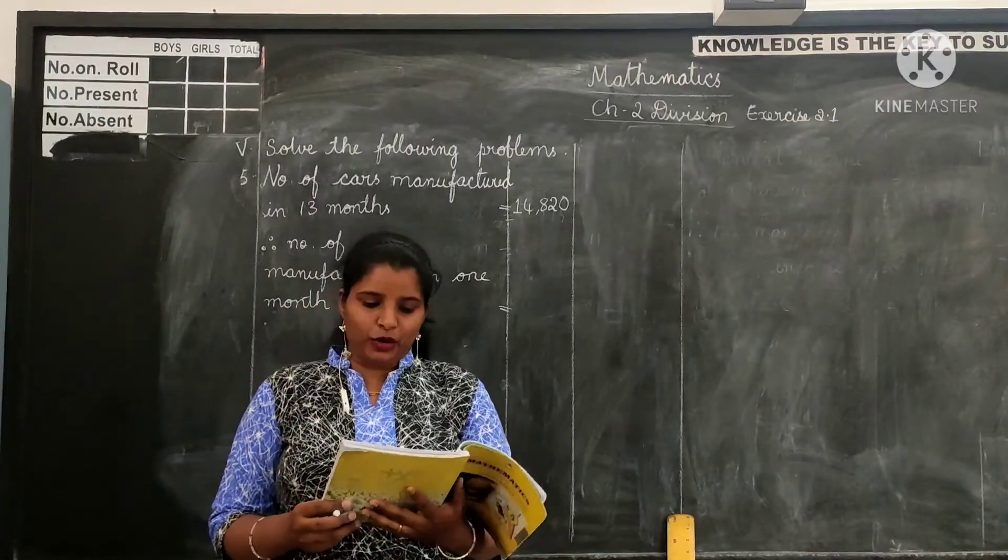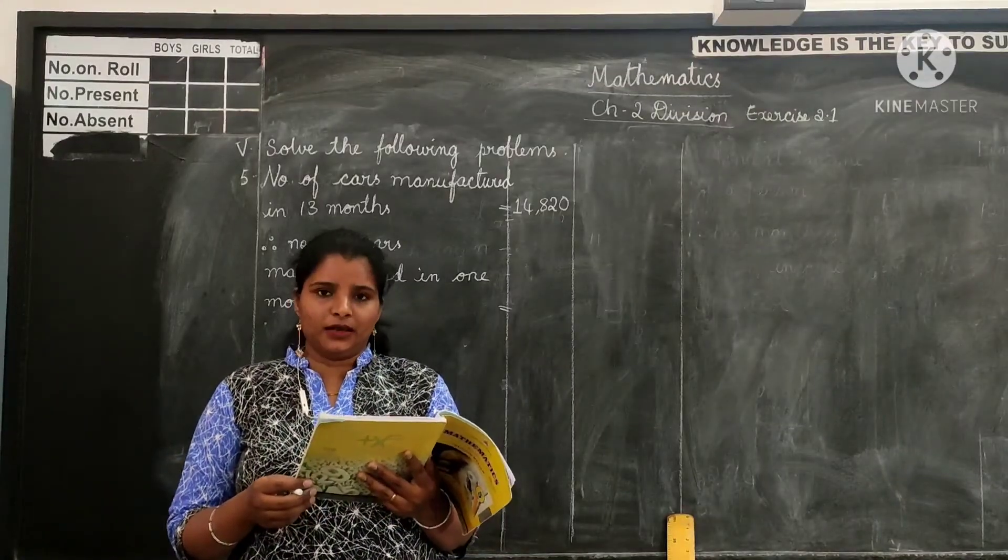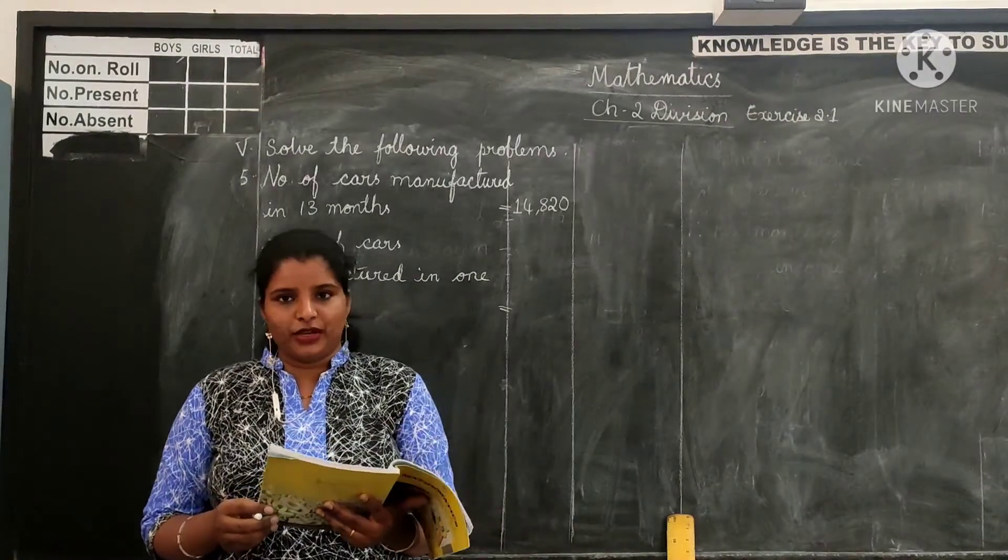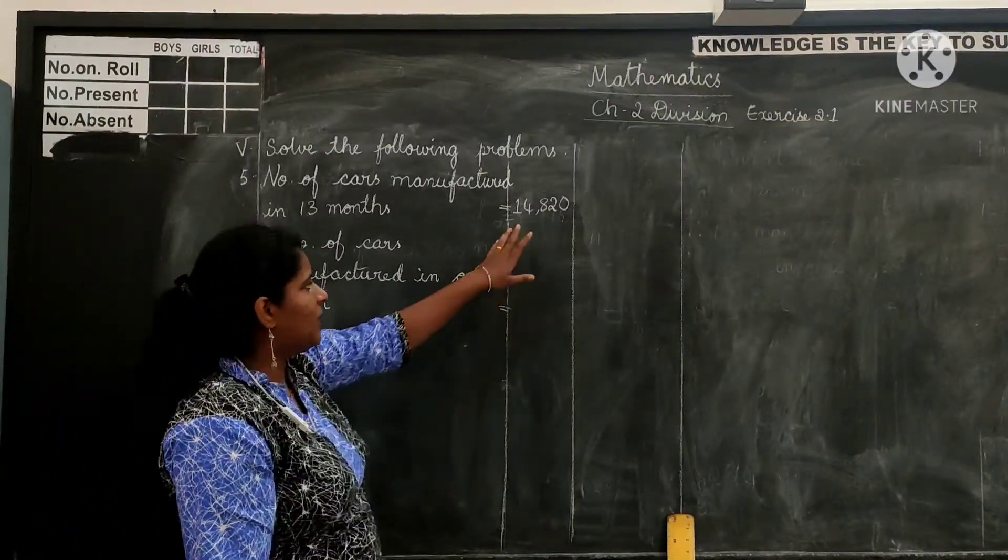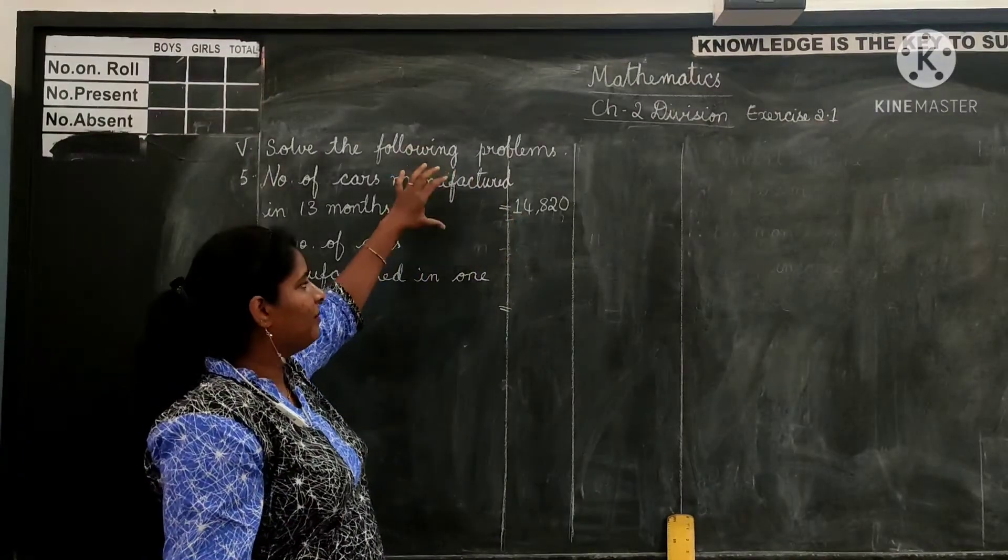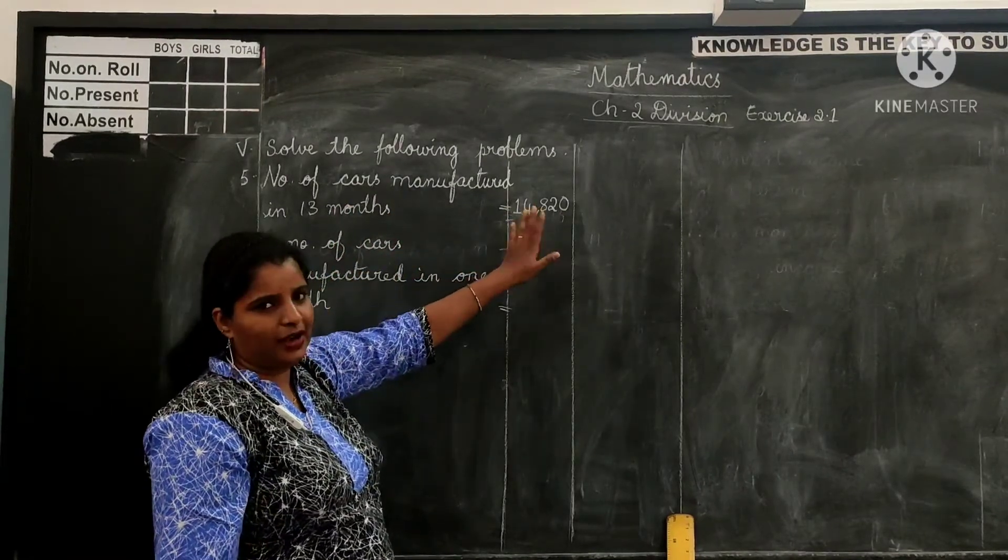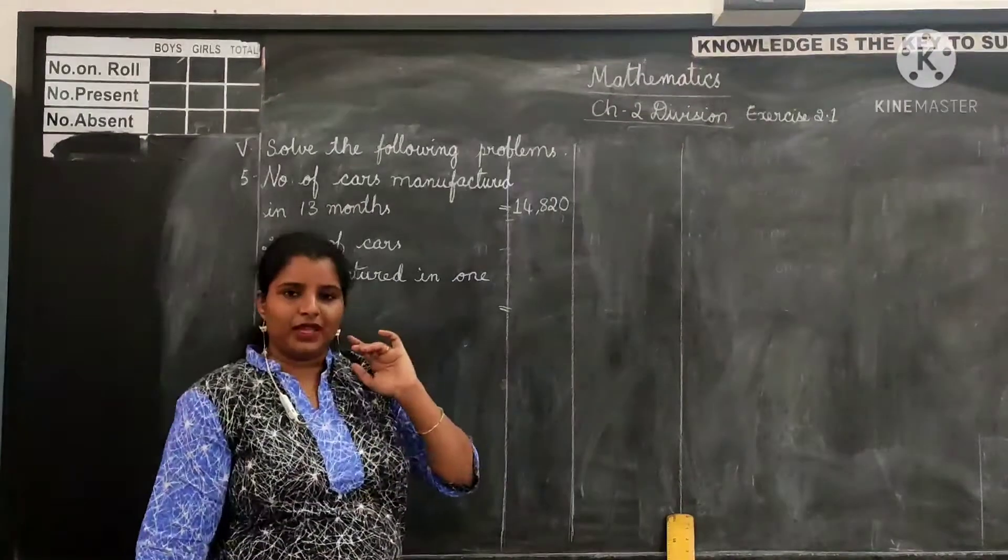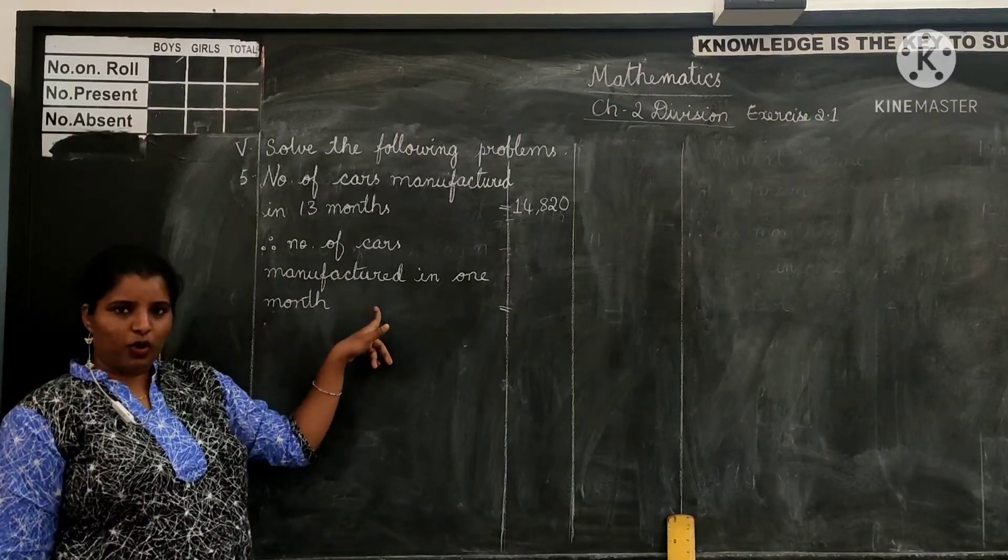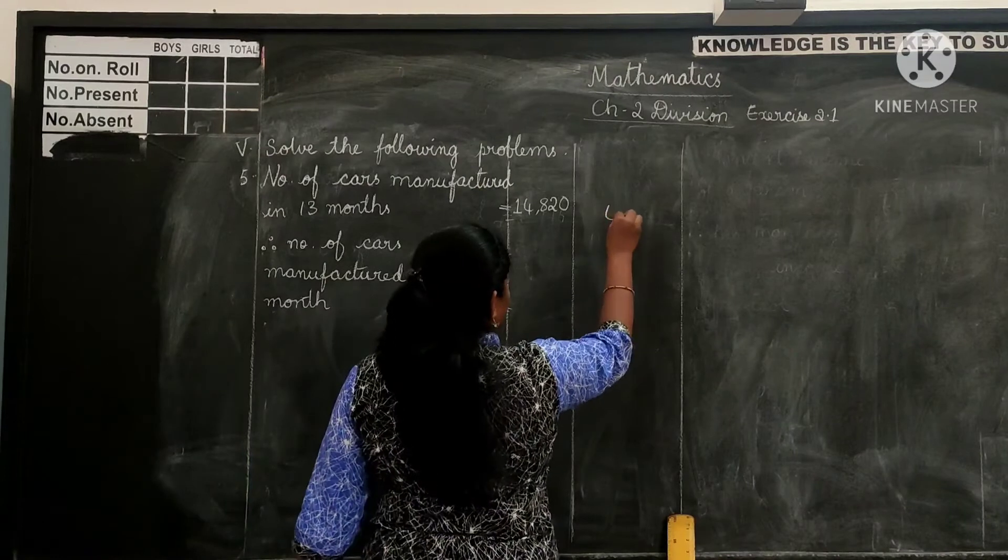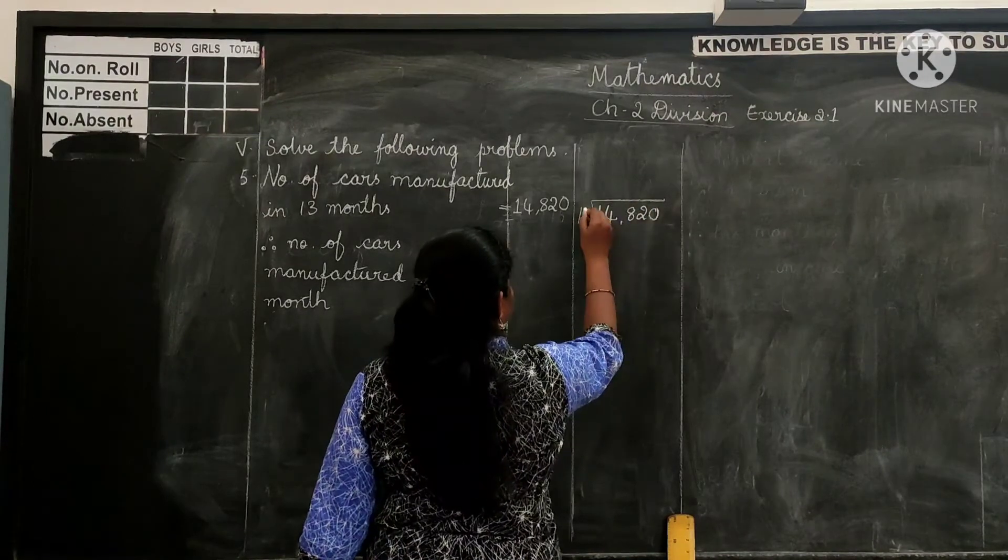So let's move on to the fifth problem. A car manufacturing company manufactures 14,820 cars in 13 months. Find the number of cars manufactured in one month. Let us look at the statements. Number of cars manufactured in 13 months is 14,820 cars. So in 13 months if they manufactured 14,820 cars, what is the number of cars manufactured in one month? To find the number of cars manufactured in one month, we have to divide 14,820 by 13.